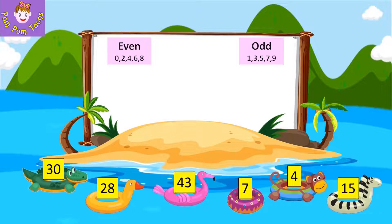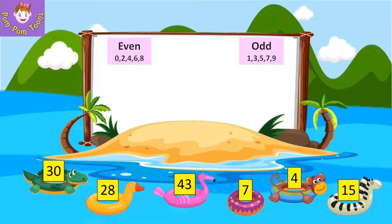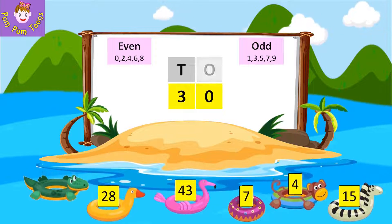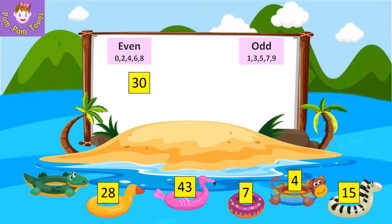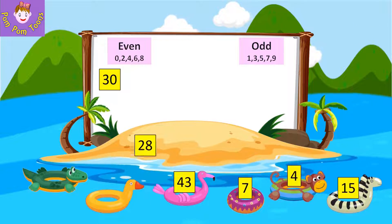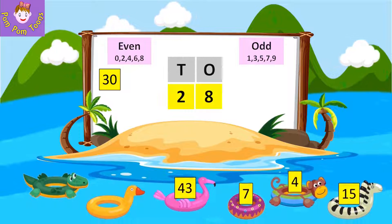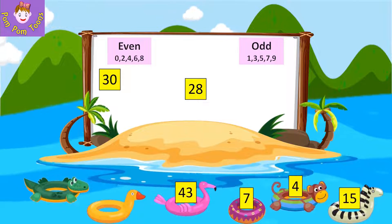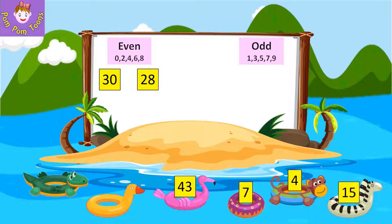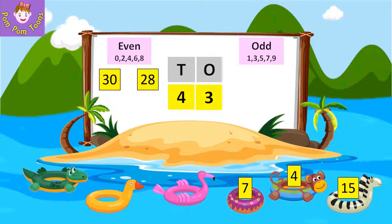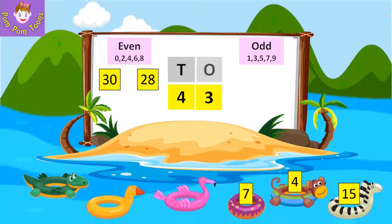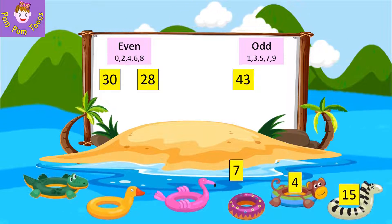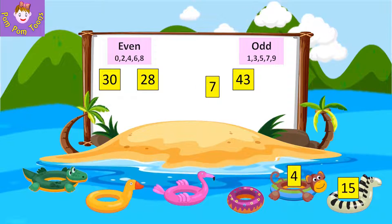Look at the numbers. 30 — it has 0 in the one's place, so 30 is an even number. 28 — it has 8 in the one's place, so 28 is an even number. 43 — it has 3 in the one's place, so 43 is an odd number. 7 is an odd number.